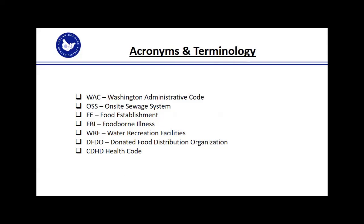Some acronyms and terminology: WAC is Washington Administrative Code; OSS is on-site sewage system; FE is food establishments; FBI is foodborne illness; WRF is water recreation facility; and DFDO is donated food distribution organizations.